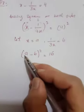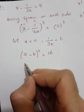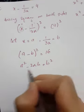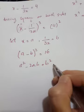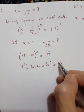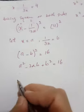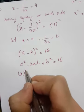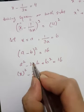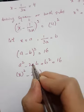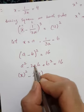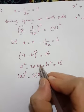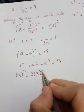Do you know the formula for a minus b squared? It equals a squared minus two ab plus b squared. So x squared minus two times x multiplied by one over three x, which is two times a times b.